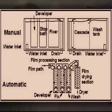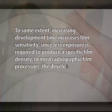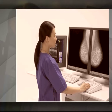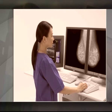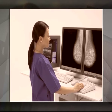Development time. When an exposed film enters the developer solution, development is not instantaneous. It is a gradual process during which more and more film grains are developed, resulting in increased film density. The development process is terminated by removing the film from the developer and placing it in the fixer. To some extent, increasing development time increases film sensitivity since less exposure is required to produce a specific film density. In most radiographic film processors, the development time is usually fixed at approximately 20 to 25 seconds. However, there are two exceptions: so-called rapid access film is designed to be processed faster in special processors, and some mammographic films will produce a higher contrast when developed for a longer time in an extended cycle processor.